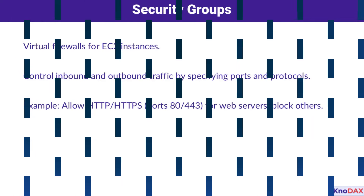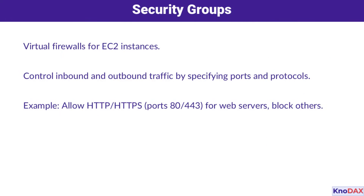Let's dive into the first layer of defense – security groups. Security groups act like virtual firewalls for your EC2 instances. You can define inbound and outbound traffic rules by specifying allowed ports and protocols. For example, your web servers might allow HTTP and HTTPS traffic on ports 80 and 443, but block all other ports to minimize vulnerabilities. Simple, yet powerful.